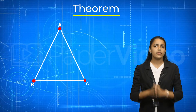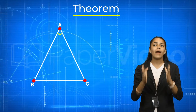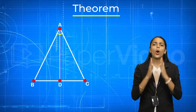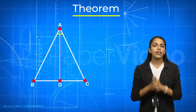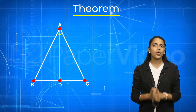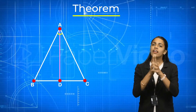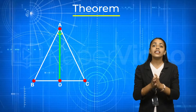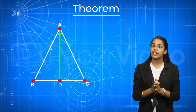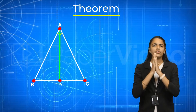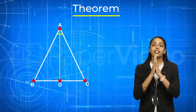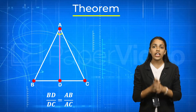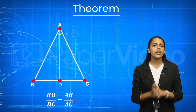According to the theorem, the internal bisector of an angle of a triangle divides the opposite side internally in the ratio of the sides containing the angle. This means that if AD is the internal bisector of angle A of triangle ABC, then BD upon DC is equal to AB upon AC.